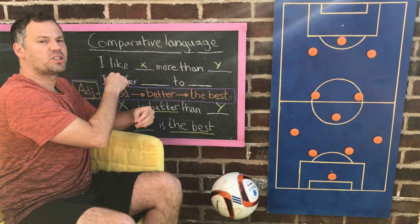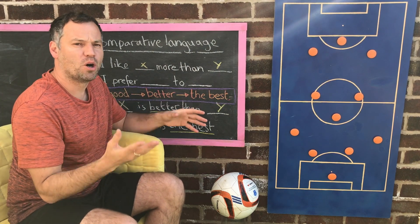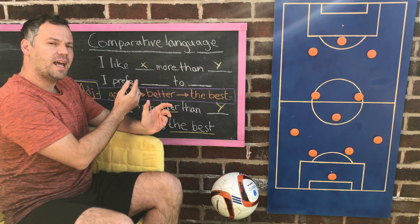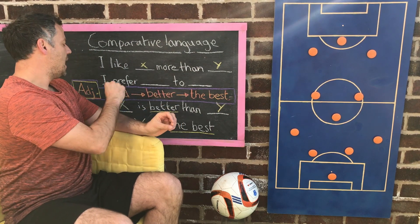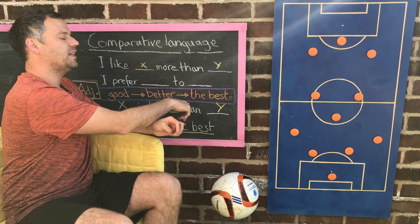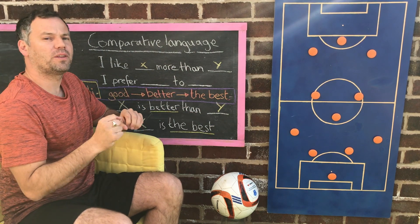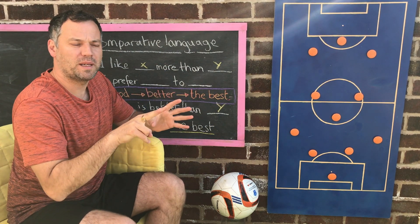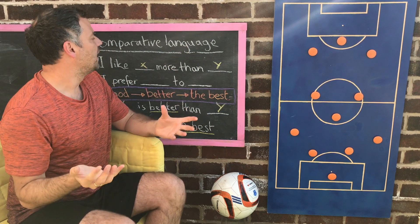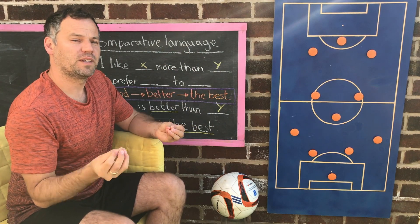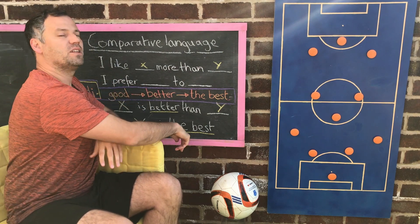If you want to say somebody is good but somebody is more good, in English we don't say 'more good' — it is irregular. We say 'better.' So you can say 'Messi is better than Ronaldo.' And if there are more than two people and you want to say they are the best, this is the superlative of good: 'Messi is the best.'